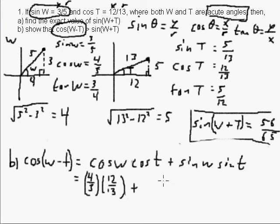Okay, so plus sine w, which is 3 over 5. Good thing I can read my own writing. Times sine of t, which is 5 over 13.